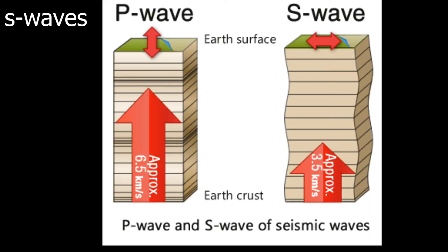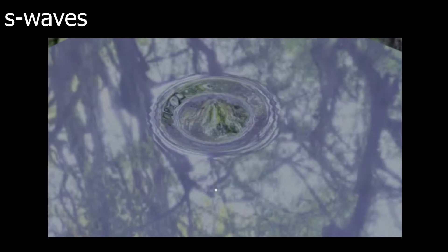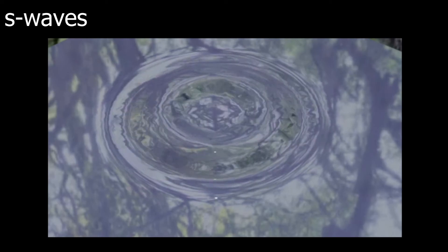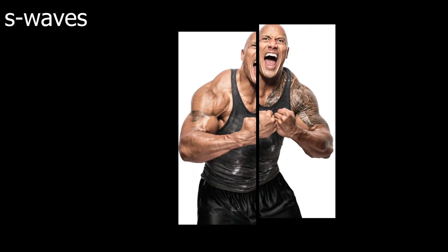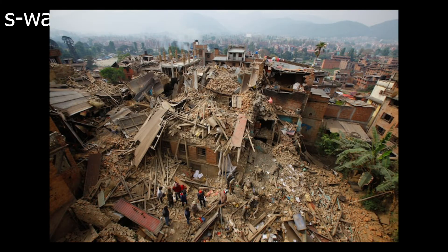S waves are significantly more destructive and act more like a ripple in a calm body of water, chaining through the ground and breaking up rock as they go. The destructive nature of these waves is not to be underestimated.